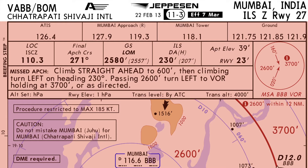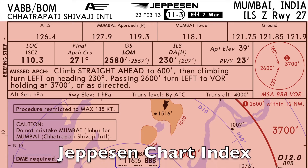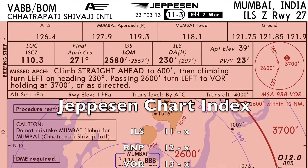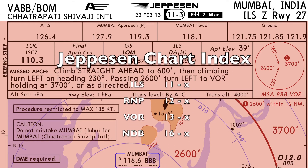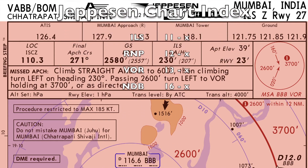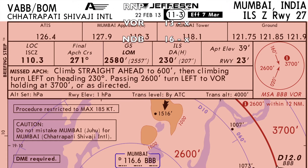An ILS chart always has the identifier 11. Jepson has standardized the classification such that the approach with the highest precision gets the lowest index number. So ILS charts are 11, RNP charts are index 12, VOR approaches are index 13, and NDB approach charts, which are now obsolete, are index 16.